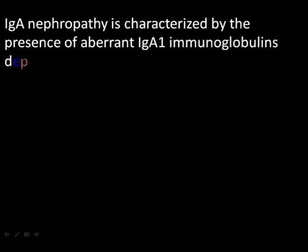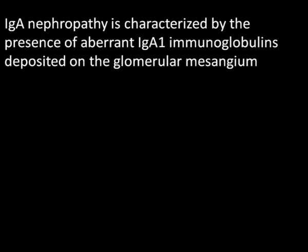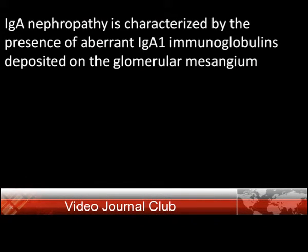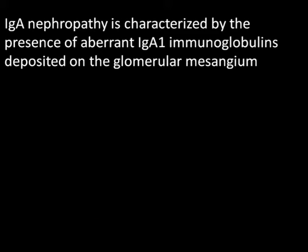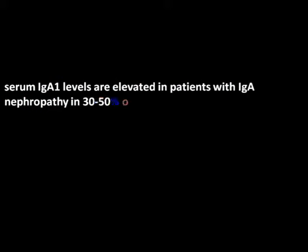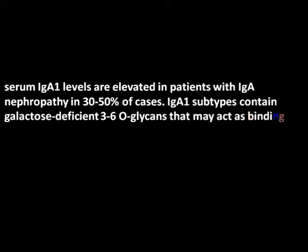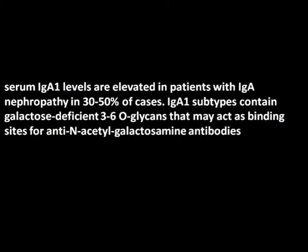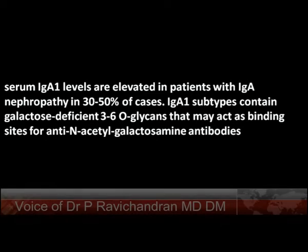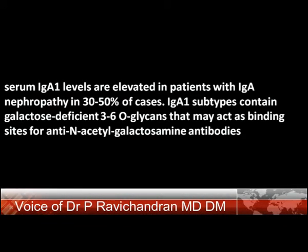Today we are going to talk about IgA nephropathy. IgA nephropathy is characterized by the presence of aberrant IgA1 immunoglobulins deposited on the glomerular mesangium. Serum IgA1 levels are initially elevated in patients with IgA nephropathy in 30-50% of cases. IgA1 subtypes contain galactose-deficient O-glycans that may act as binding sites for anti-N-acetyl-galactosamine antibodies.